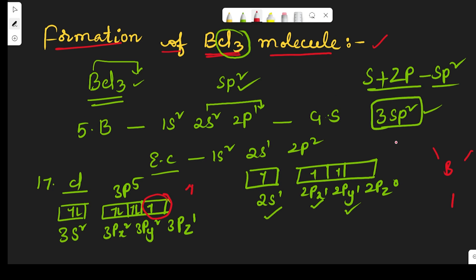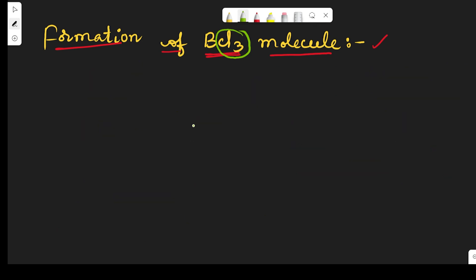Let me explain clearly. This is the boron atom. It contains three sp² hybridized orbitals. So these are the three sp² hybrid orbitals.